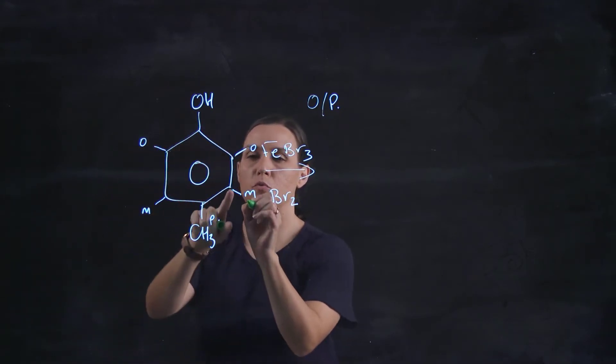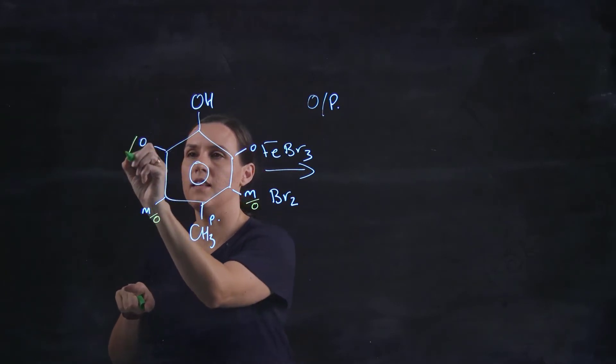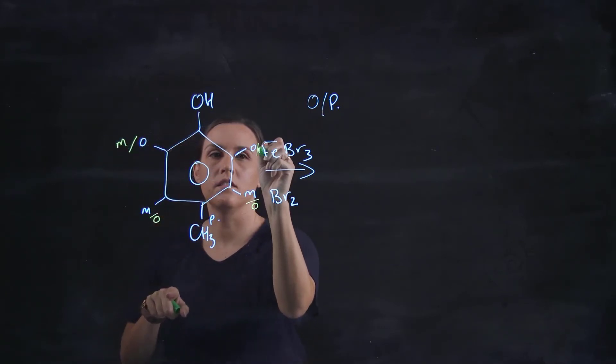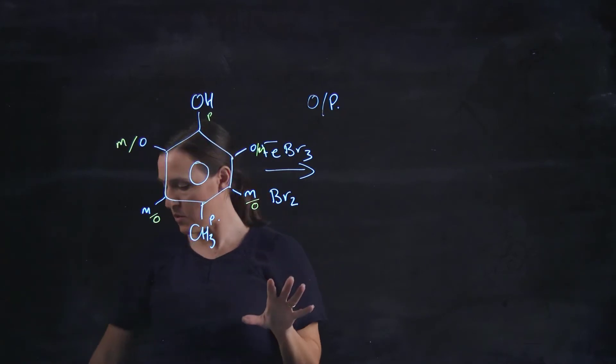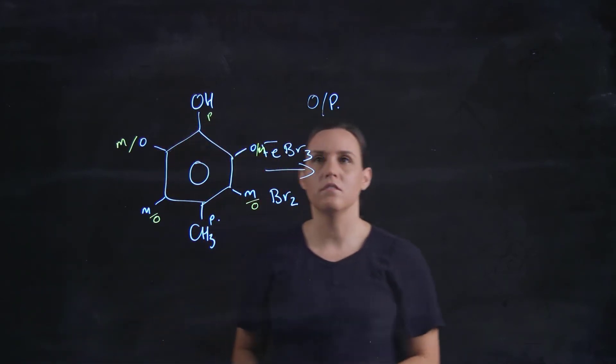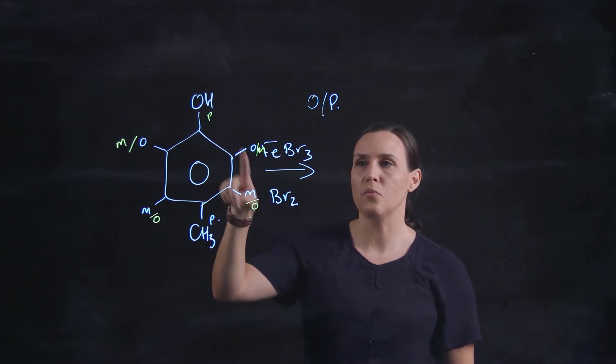So its ortho position will be where the meta is, and this will be the meta and this will be the para. So there's a lot to think about in this question. Now they both direct the same but they've both got different ortho positions.